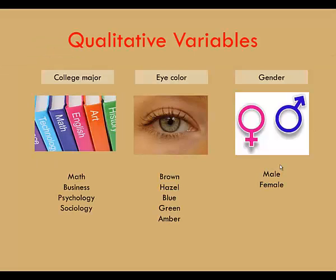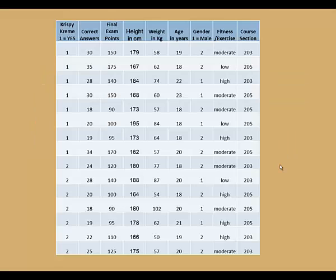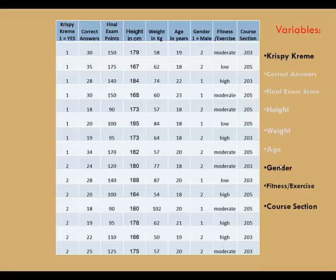Some examples of categorical variables are college major, eye color, and gender. In my Krispy Kreme data set, the qualitative variables are Krispy Kreme, remember that that was a yes or no category, gender, fitness or exercise level, and course section.